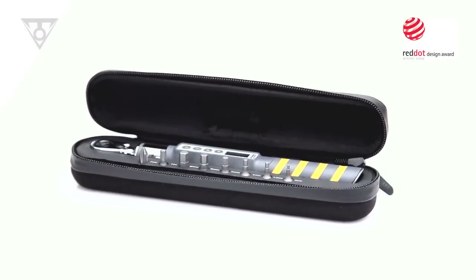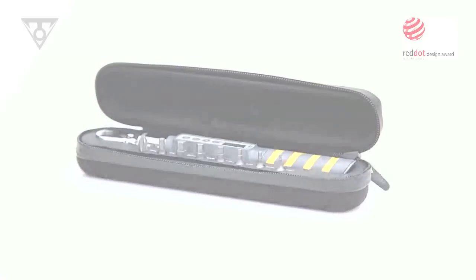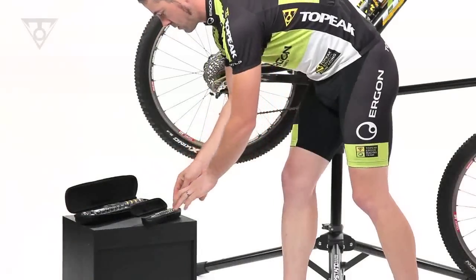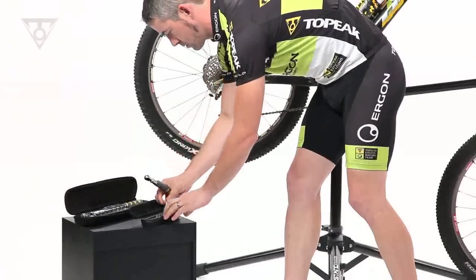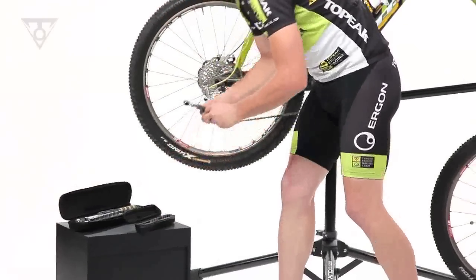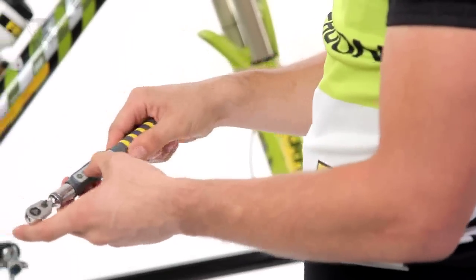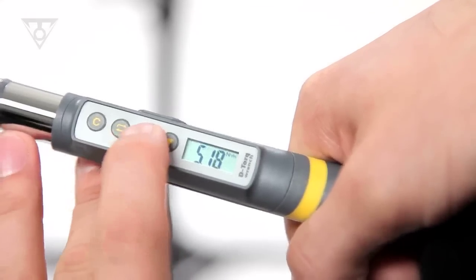The D-Torque Digital Torque Wrench series guarantees the proper installation of today's featherweight carbon fiber and aluminum components. To prevent overtightening, the wrenches include programmable audible warnings for your target torque value as well as overtorque.